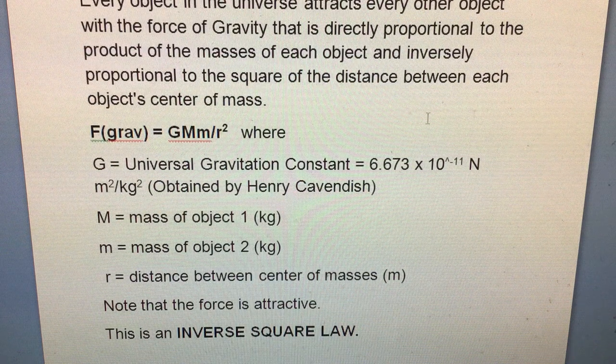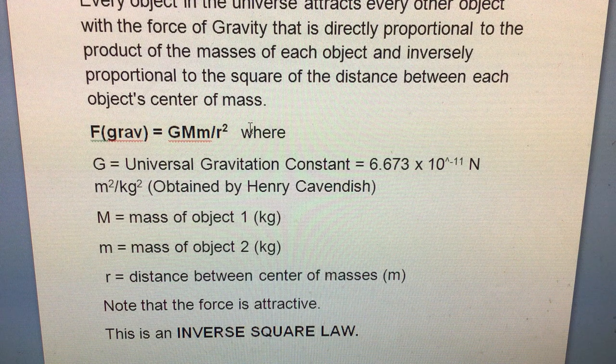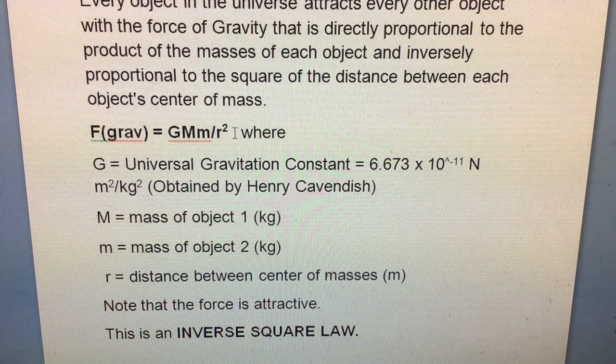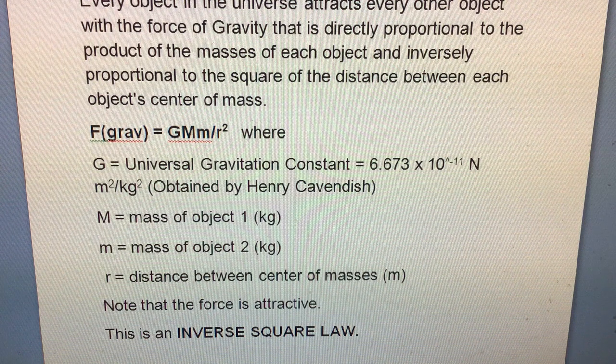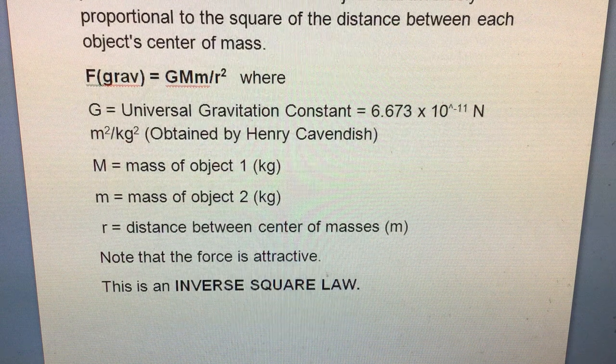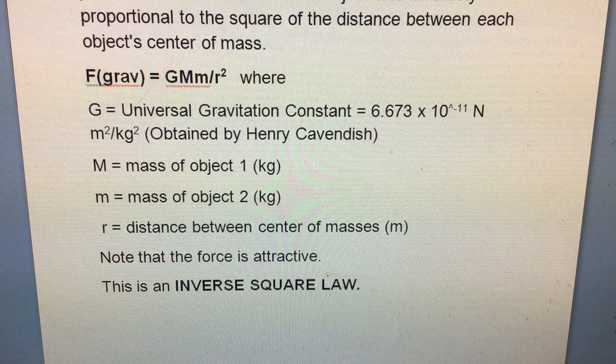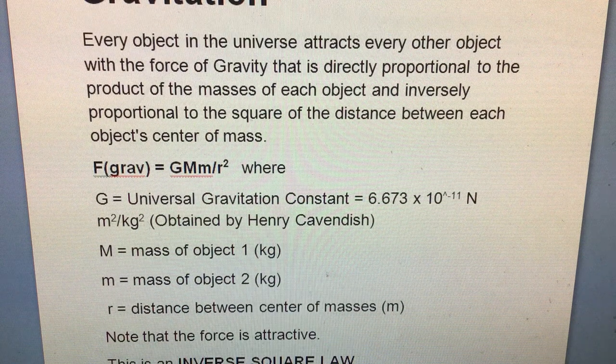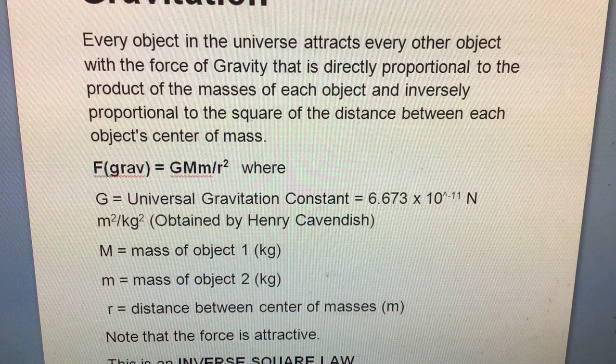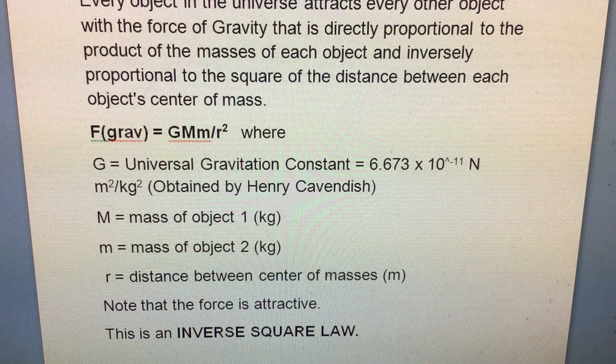Also worth noting is that the force is an inverse square law, and you see these inverse square laws all over in physics. It's a consequence of the geometry of space. Coulomb's law, which I will talk about in another video, is another example of an inverse square law. So that's the first concept we have to think about - Newton's law of universal gravitation.